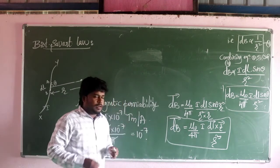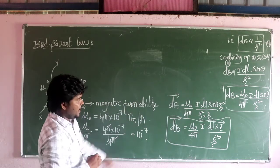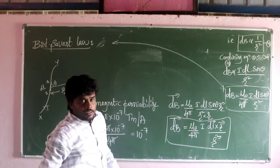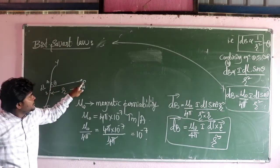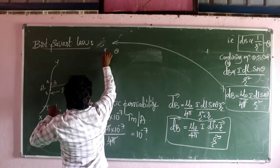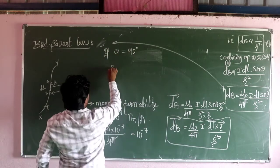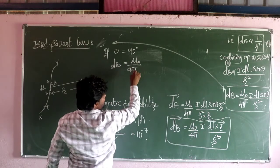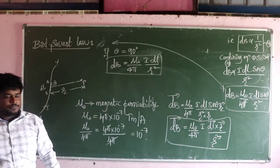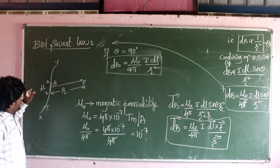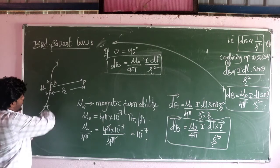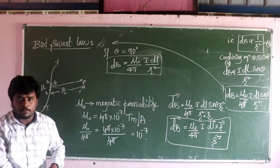Now, some very important points about the Biot-Savart law. Theta is the angle between the current element and the line joining the current element with the point P. If theta is equal to 90 degrees, then dB is equal to mu0 divided by 4pi, multiplied by i dl divided by r square. This is the maximum value of the magnetic field — the magnetic field at a point perpendicular to the current-carrying conductor is maximum.